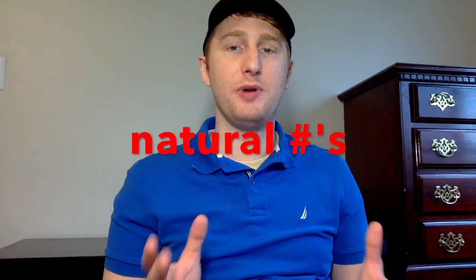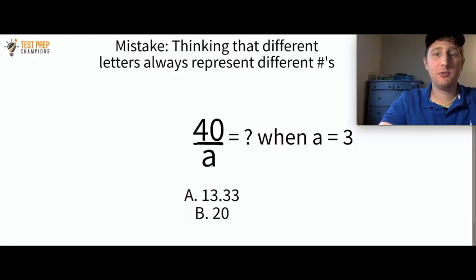Another mistake would be thinking that letters can only stand for natural numbers. So let's say you got a multiple choice question that said 40 divided by A equals what when A equals three? Is it A 13.333? Or B 20? Now, you're probably not going to get something this easy on your test. I'm just using this to illustrate the point that a lot of students would think that B equals 20. They would say, well, 13.33, that's a decimal. That's not a whole number. That's not a natural number. So A can't be the right answer.